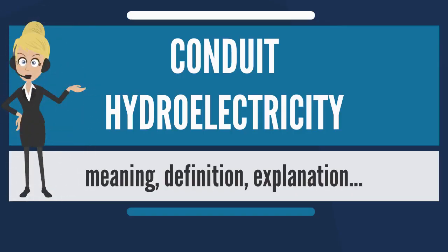Conduit hydroelectricity, or conduit hydropower, is a method of using mechanical energy of water as part of the water delivery system through man-made conduits to generate electricity. Generally, the conduits are existing water pipelines such as in public water supply.